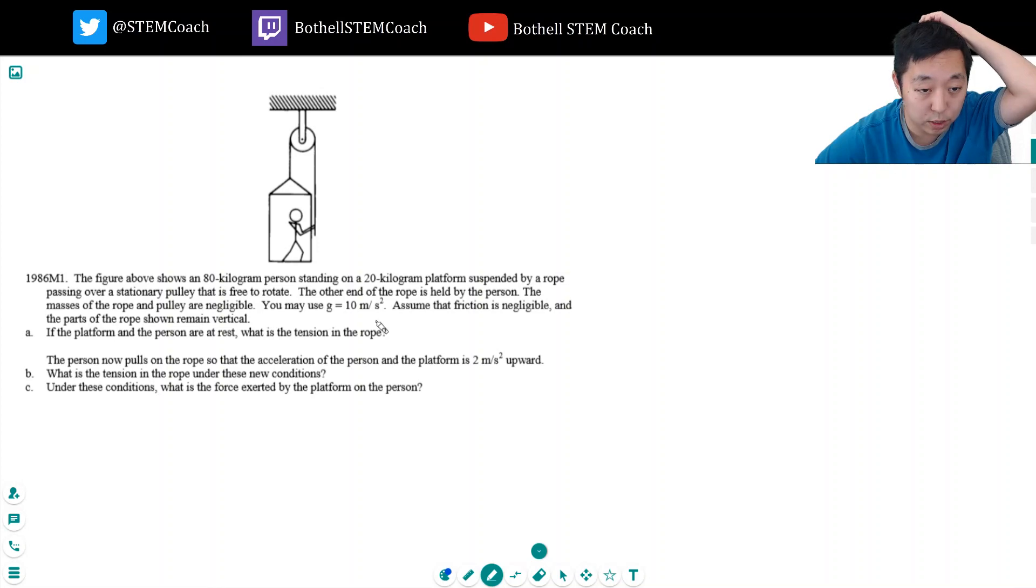Assume that friction is negligible and that the parts of the rope shown remain vertical. If the platform and the person are at rest, what is the tension in the rope? That's interesting.